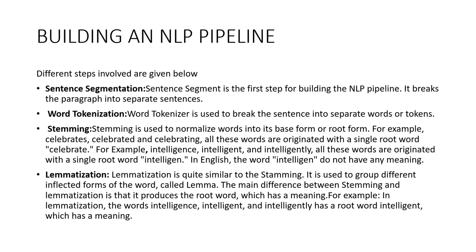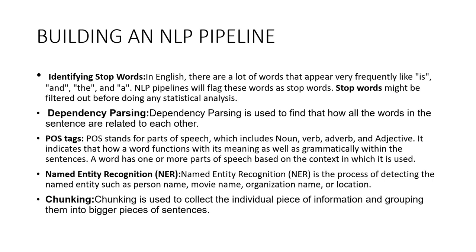Lemmatization is a more accurate process, quite similar to stemming. It groups different inflected forms of words called lemmas. The main difference is that lemmatization always produces a root word that has meaning — for example, 'intelligence,' 'intelligent,' and 'intelligently' have the root word 'intelligent,' which has meaning. The next step is identifying stop words. In English there are many words that appear very frequently, like 'is,' 'and,' 'the,' and 'a.' NLP pipelines flag these as stop words, which may be filtered out before statistical analysis.